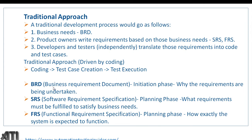BRD is the Business Requirement Document, which comes in the initiation phase and answers why requirements are being undertaken. SRS — Software Requirement Specification — comes in the planning phase and defines what requirements must be fulfilled to satisfy business needs. FRS — Functional Requirement Specification — also comes in the planning phase and describes how exactly the system is expected to function.